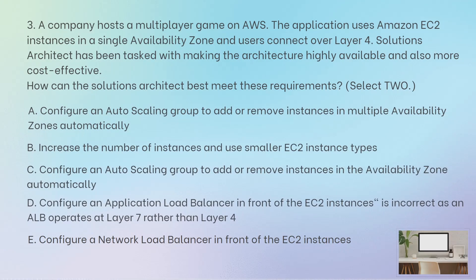Next question: A company hosts a multiplayer game on AWS. The application uses EC2 instances in a single Availability Zone, and users connect over Layer 4 — Layer 4 is the network layer. The solutions architect has been tasked with making the architecture highly available, meaning working across more than one Availability Zone. Currently, if that single AZ goes down, the whole application is down. The requirements are: highly available and more cost-effective. Make sure you read whether you need to select one or two answers.